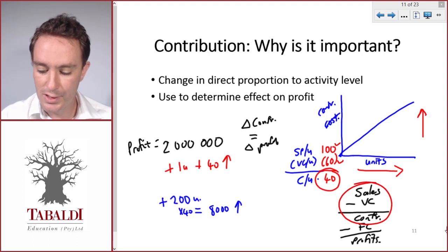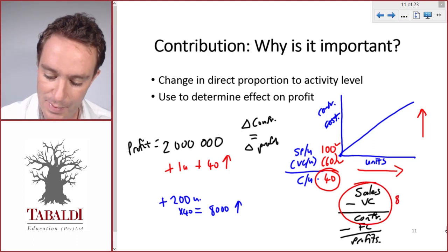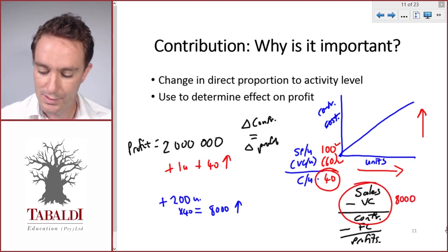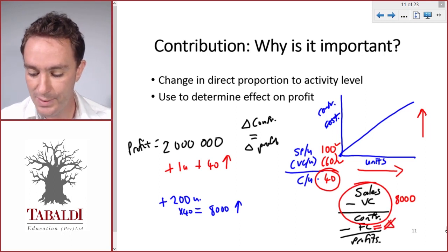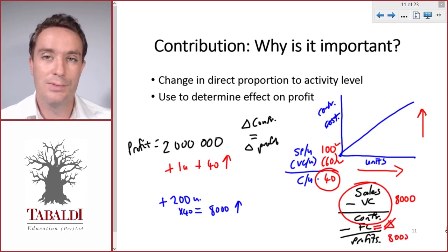So if contribution changes by 8,000 and our fixed costs stay the same, with no change, then it means our profit will change by 8,000.